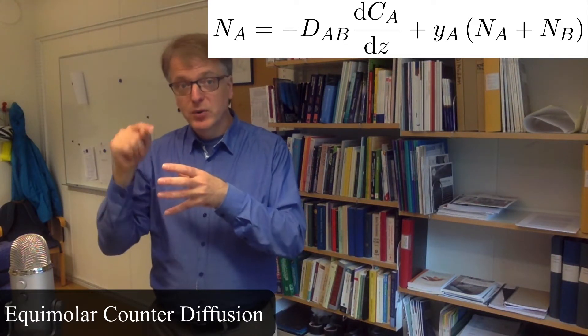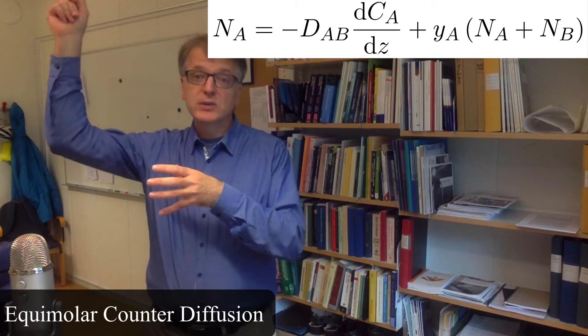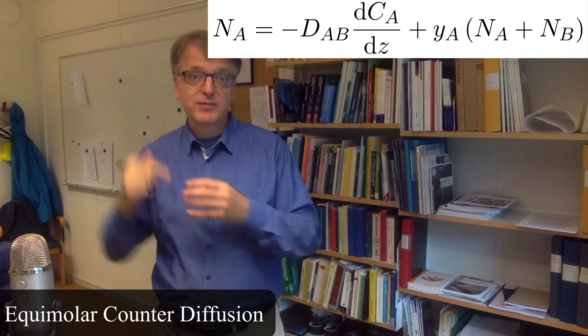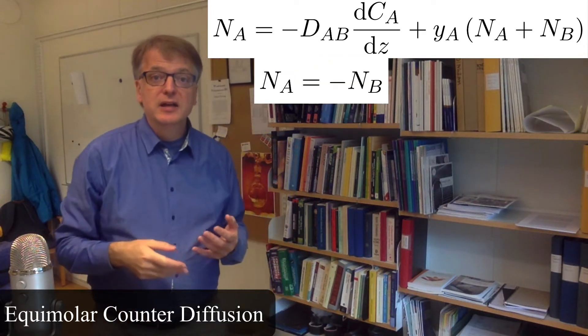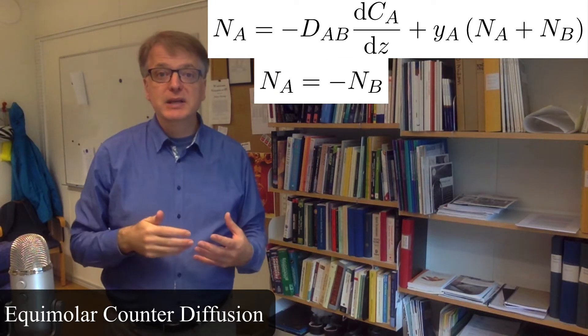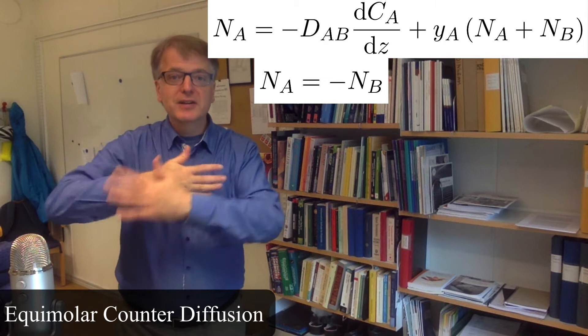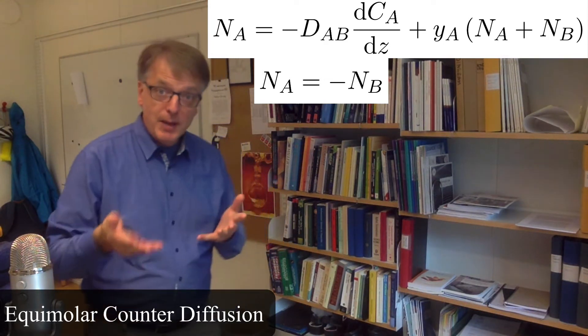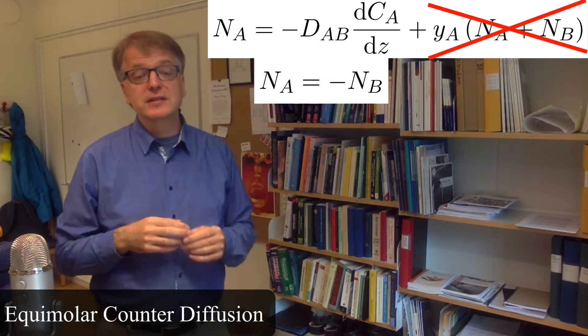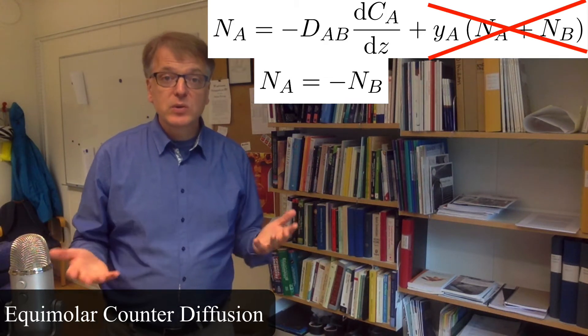So for each bromine molecule that diffuses out, one air molecule must diffuse in, so NA must equal minus NB - the same numerical value but different directions, so different signs. What happens then is that the entire parenthesis disappears, so there is no convection.